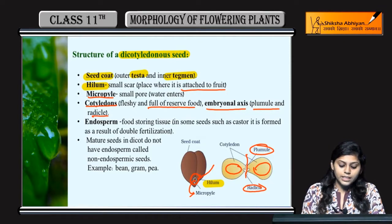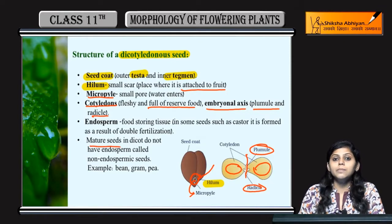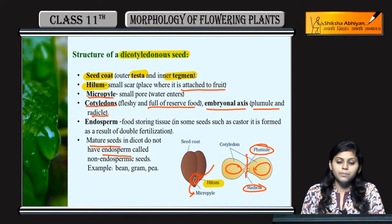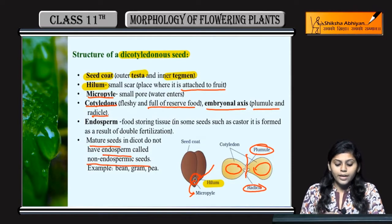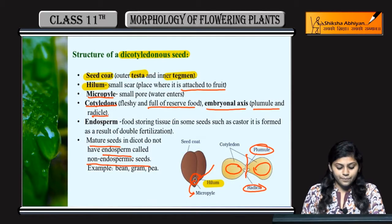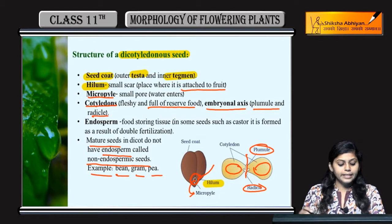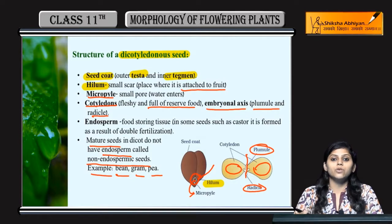Dicots ke jo mature seeds hote hain, unmein endosperm nahi hota hai. Is liye unhe non-endospermous seeds kehte hain. Example: bean, gram, and pea. Ye tha monocots and dicots ke baare mein.